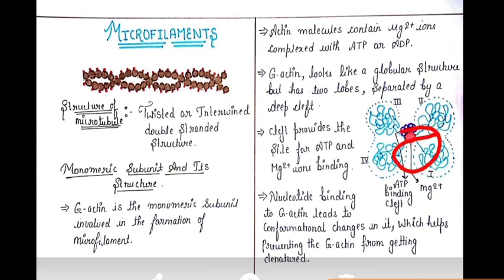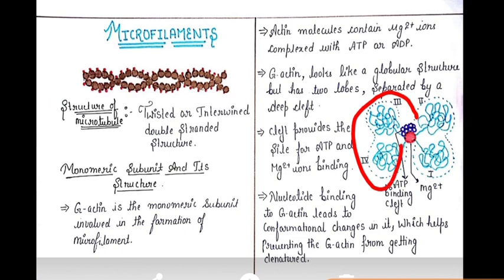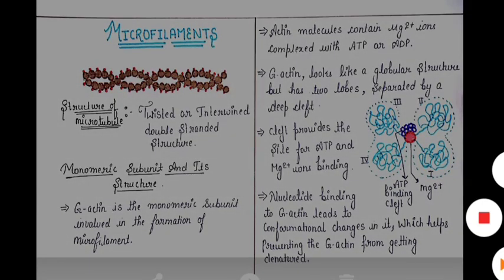In this cleft there are some components present that maintain the structure. These components are magnesium ions, and these magnesium ions are complexed by some nucleotides. In the case of microfilaments, they bind adenosine nucleotides — whether ATP or ADP. These nucleotides play a very important role because if nucleotides do not bind, there will be no conformational changes, the structure will not be stable, and it will denature. So these nucleotides protect against denaturation.